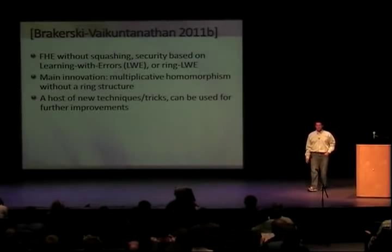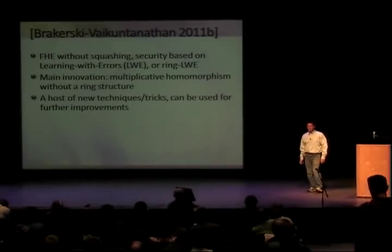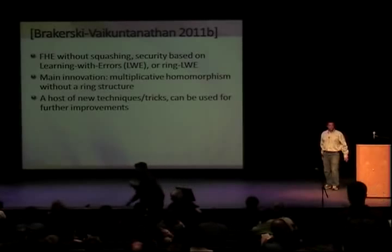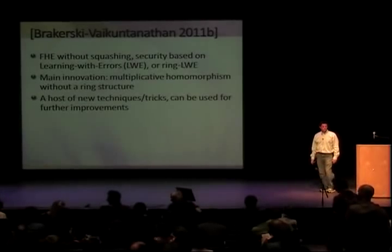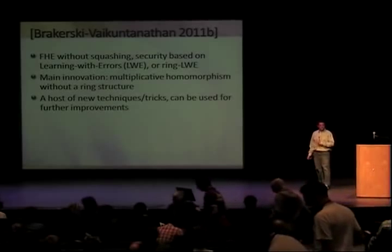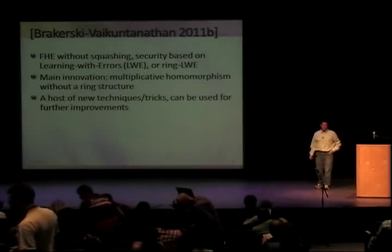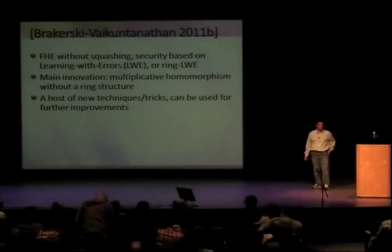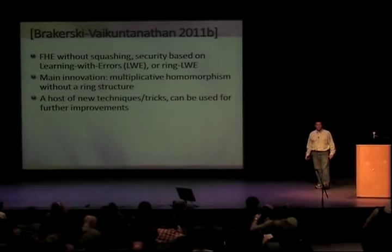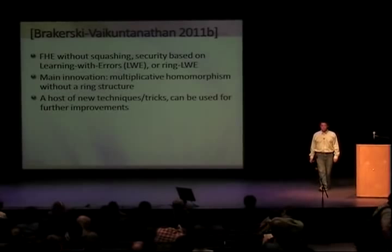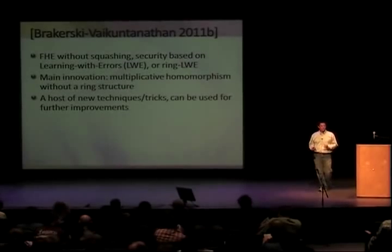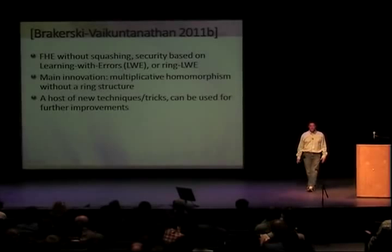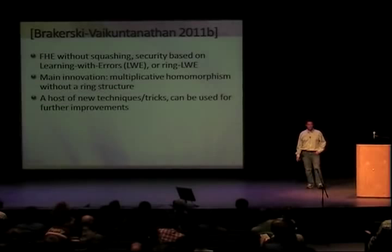I'll start by talking about the Brakerski-Vaikuntanathan scheme and then move to a variant with Gentry. This is an upcoming paper. What they do is fully homomorphic encryption without squashing, where security is based on the Learning With Errors problem or a variant called Ring LWE. The main striking point about their system is that they deviate from the blueprint in that they do support multiplication, but there is no underlying ring structure — or at least not in the same way as in previous schemes.